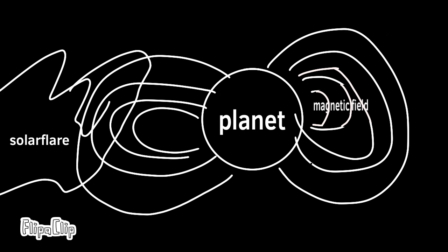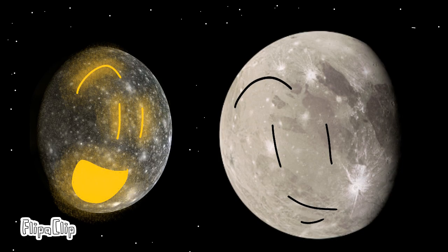For example, Earth has a magnetic field that blocks it away from getting hit by the sun's solar flares, but Mars and Venus don't have any magnetic fields, so they get hit by solar flares very often. It's pretty interesting.